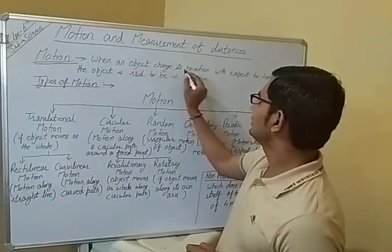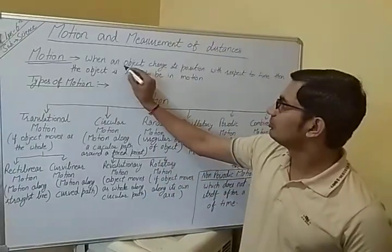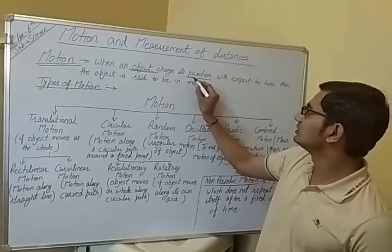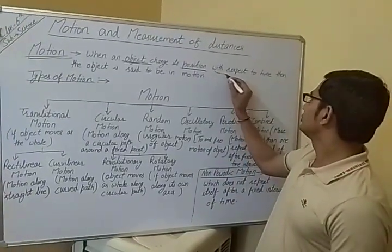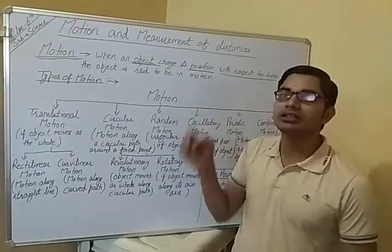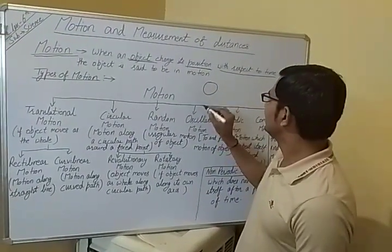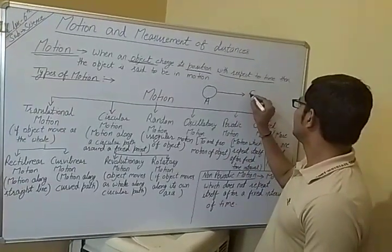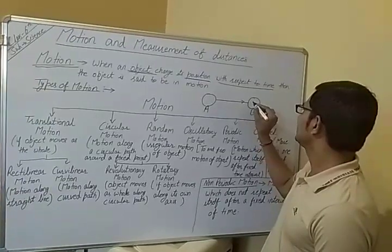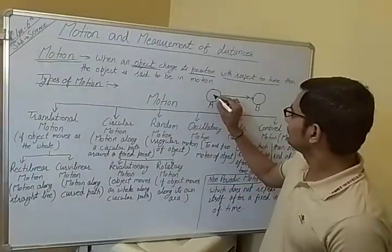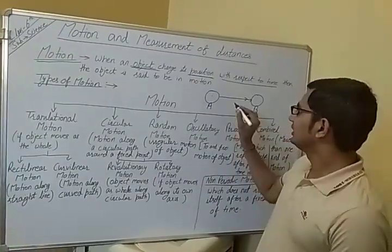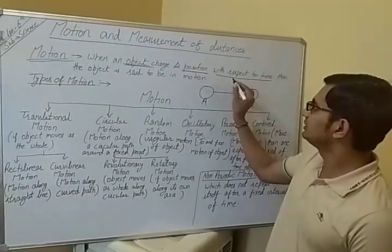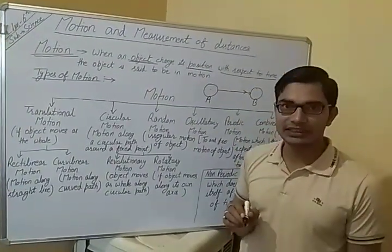Motion: when an object changes its position with respect to time. Means, any object when it changes its position with respect to time, then the object is said to be in motion.